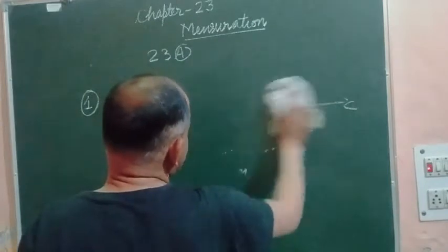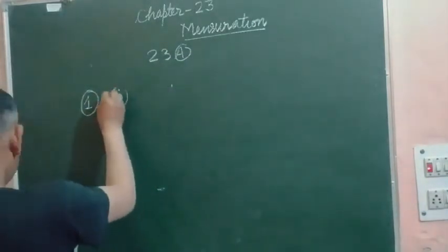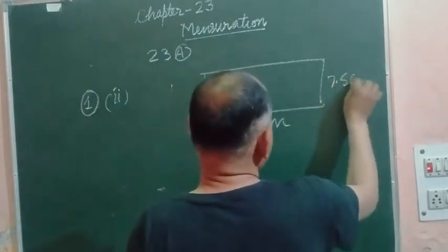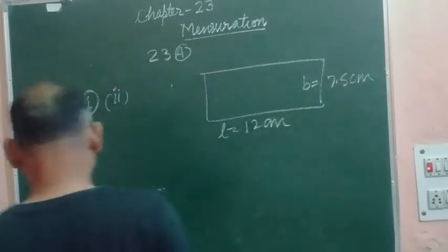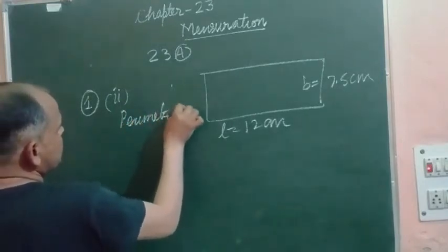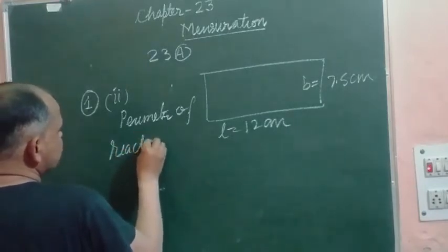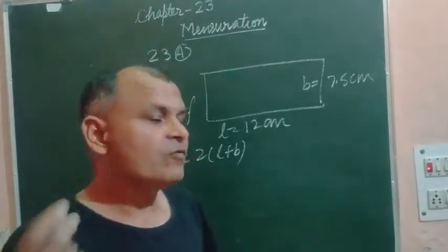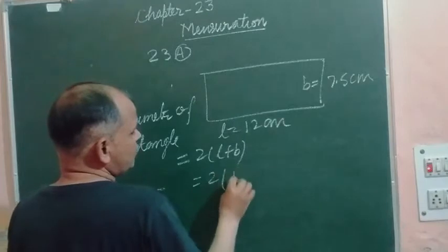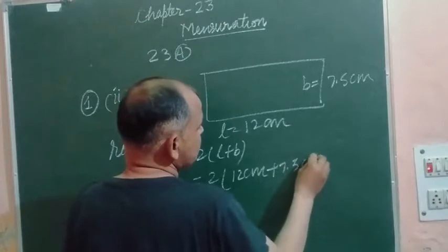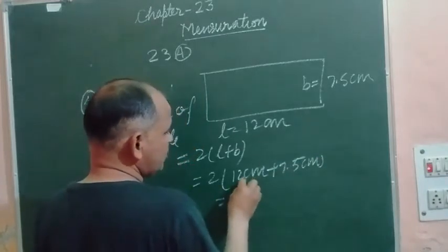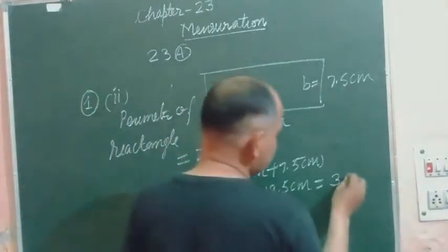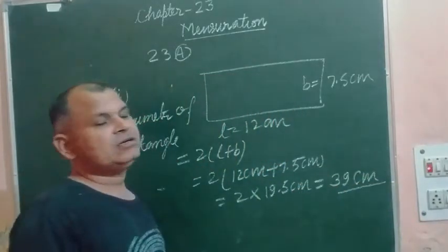Now we have a rectangle in the second part of question one. A rectangle of length 12 centimetres and breadth 7.5 centimetres is given. So this is L and this is B. The perimeter of a rectangle equals 2 times L plus B. Putting values: 2 times 12 plus 7.5 equals 2 times 19.5 equals 39 centimetres. So 39 centimetres is the perimeter of the rectangle.